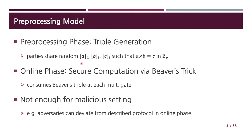That is, parties jointly and securely generate random additive secret shares of A, B, and C, satisfying A times B equals C. Then, in the online phase, parties can perform secure computation using the famous Beaver's trick, where Beaver's triple is consumed at each multiplication gate. However, this is not sufficient for our malicious setting, since adversaries might deviate from the described protocol in the online phase.